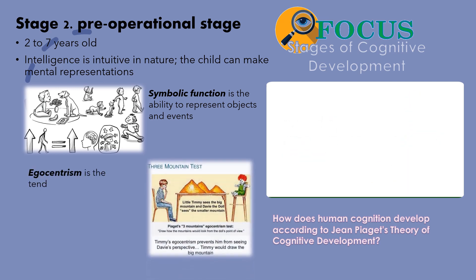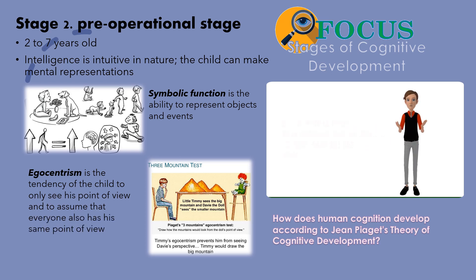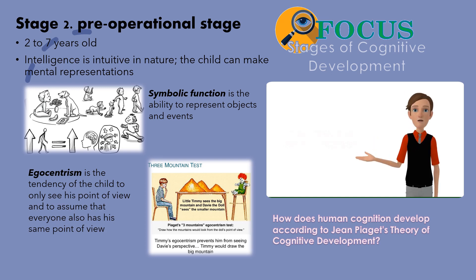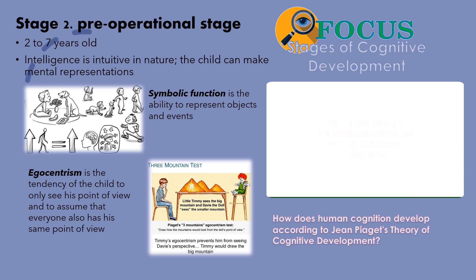Egocentrism: This is the tendency of the child to only see his point of view and to assume that everyone has the same point of view. The child cannot take the perspective of others. You see this in a five-year-old boy who buys a toy truck for his mother's birthday, or a three-year-old girl who cannot understand why her cousins call her daddy 'uncle' and not 'daddy.'